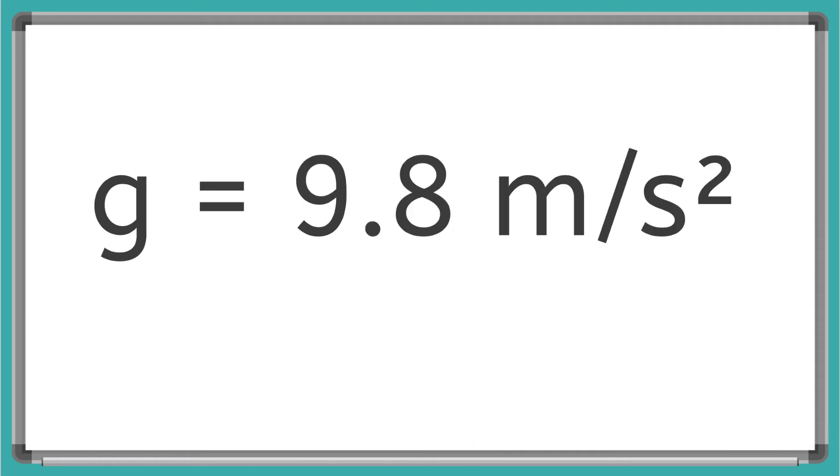For now, we just need to remember that on planet Earth, the acceleration due to gravity is a constant of 9.8 meters per second squared. And we'll get into what that means later.